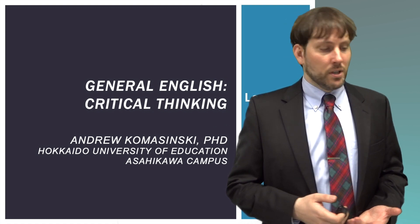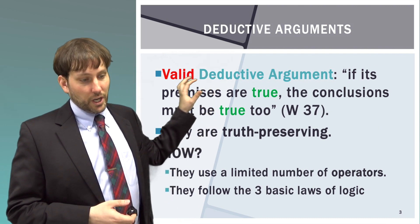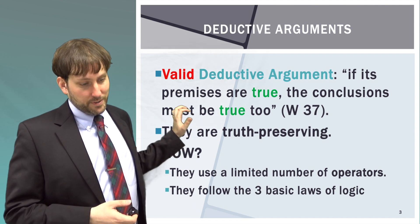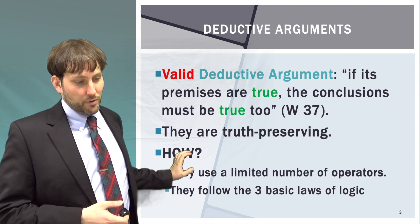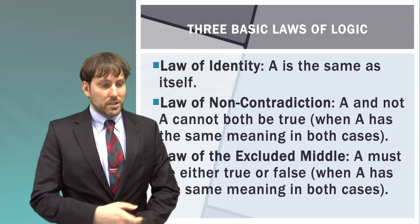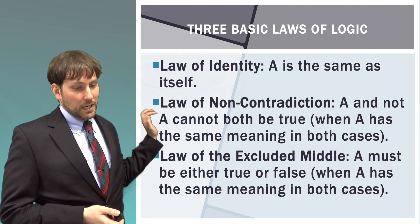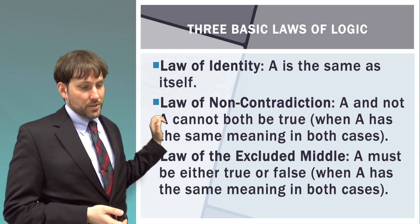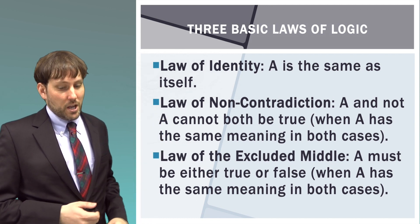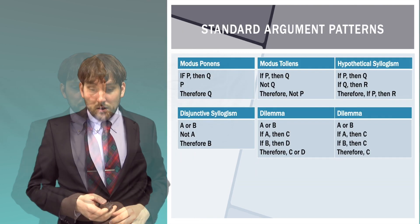Let's review. A valid deductive argument is one where if its premises are true, the conclusion must be true too. These arguments are truth-preserving. They do this by following a limited number of operators and the three basic laws of logic. They are the law of identity — that A is the same as itself — the law of non-contradiction, that A cannot both be true and false at the same time when it has the same meaning, and the law of the excluded middle, that A must be either true or false when it has the same meaning in both cases.